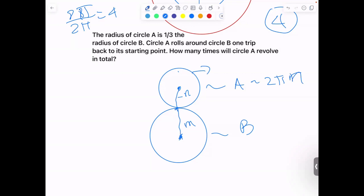And the circumference of the rotating circle is going to be 2π times (N + M).